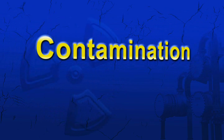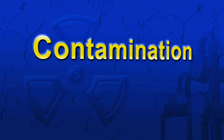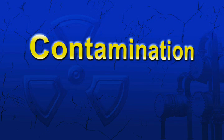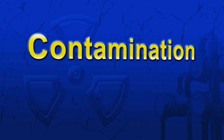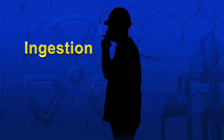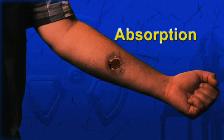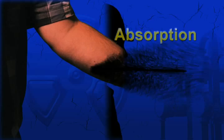Contamination occurs when radiation enters the body. In the case of NORM, this may occur through three different means: ingestion, which may occur by contacting your mouth, a utensil, a food item, or a cigarette with contaminated hands; absorption through wounds or breaks in the skin; or inhalation, such as by breathing in dust from dry scale.